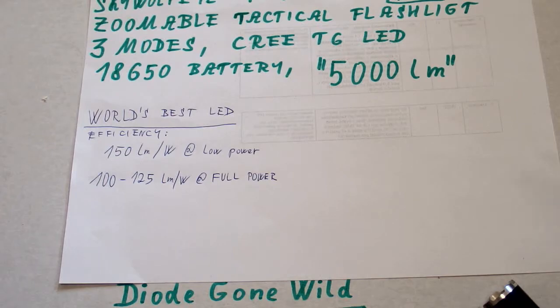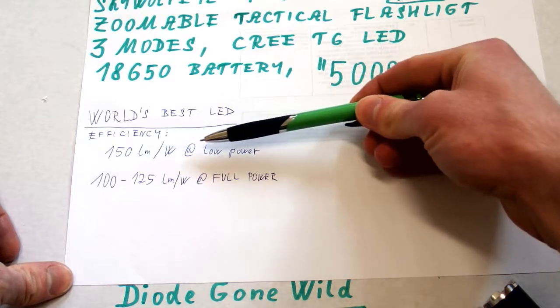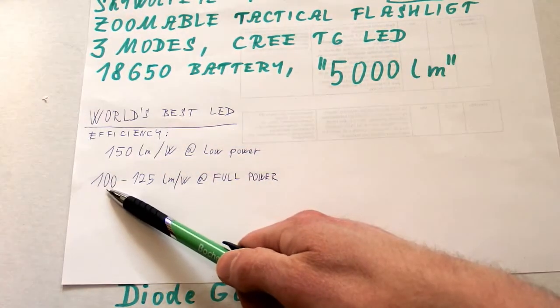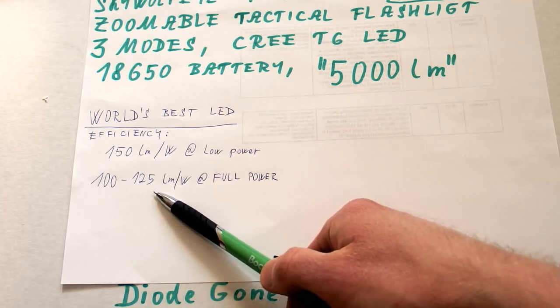So let's do some calculations. The best LEDs in the world have about 150 lumens per watt at low power, but at full power the efficiency is a bit lower, so it's about 100 to 125 lumens per watt.